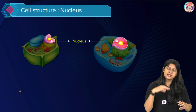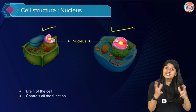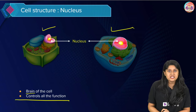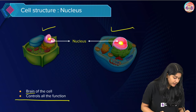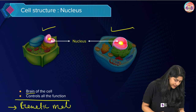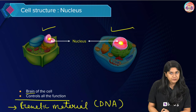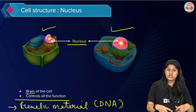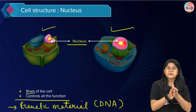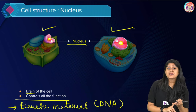Now we will discuss the most important organelle: the nucleus. Both plant and animal cells have the nucleus, which is called the brain or control center of the cell. It controls all the functions that cells perform. Apart from that, the nucleus contains the genetic material, which is DNA — deoxyribonucleic acid. This genetic material gives us various characteristic features in all living organisms.